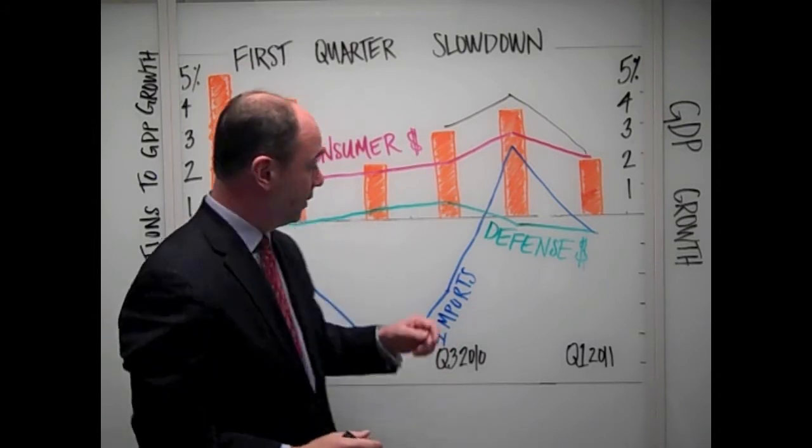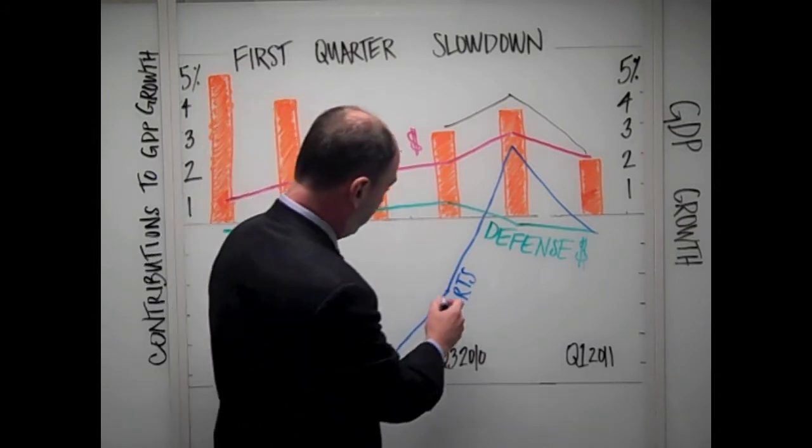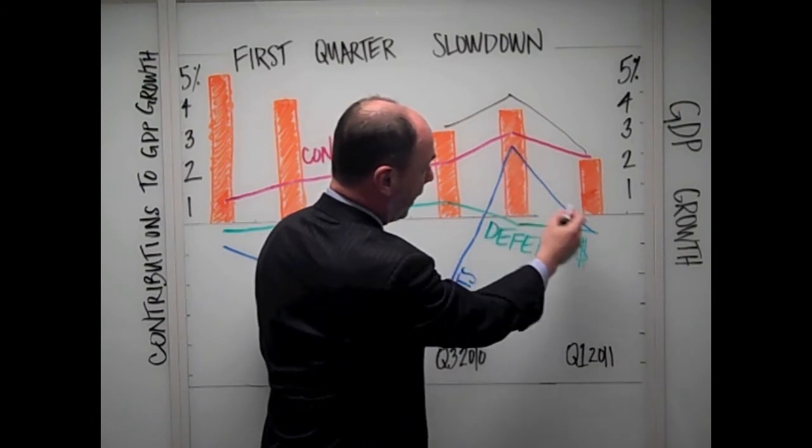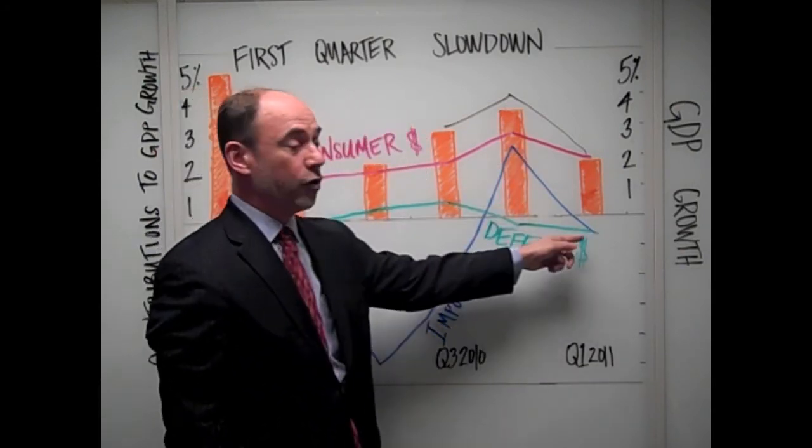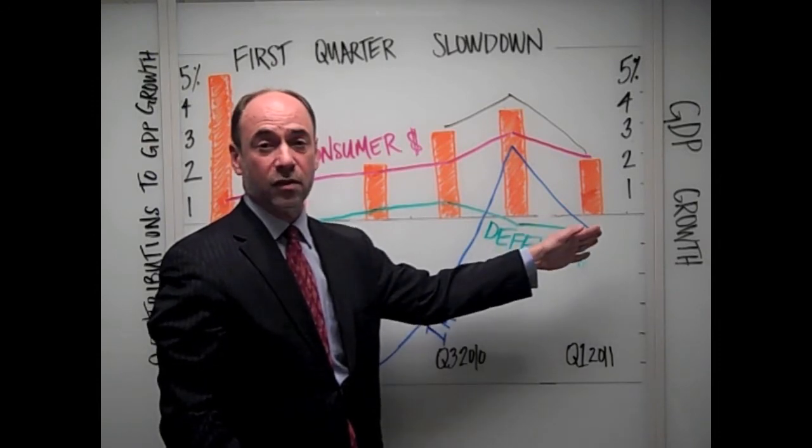And speaking of gas prices, look at the other big move. We saw imports contribute to GDP growth and then decline. Now they're subtracting from GDP growth. That's the oil price problem, and that's the source of the slowdown.